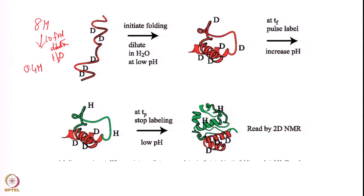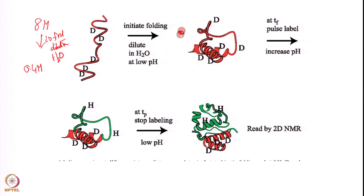You initiate folding by 20-fold dilution with H2O, but at low pH — around pH 2.5 to 3. You are providing a condition for the protein to fold but not a condition to exchange, because at low pH the exchange rate is minimum. So the protein starts to fold for a certain period of time Tf, and it is still deuterium because the pH is very low.